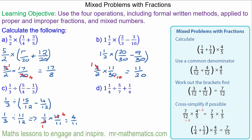And the last question. We're going to use the order of operations. So we'll do the division first. And that becomes five quarters multiplied by seven fifths, because we change the division to a multiplication.